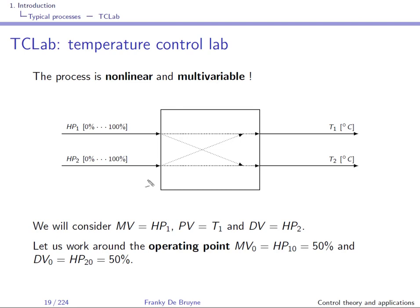We will call the first heating power MV, and PV will be our output — the first temperature. Since we work with a single-input single-output system in this course, we'll consider the second heating power to be a disturbance variable accessible for measurement. The second temperature output will not be used in this course.